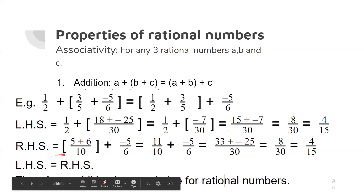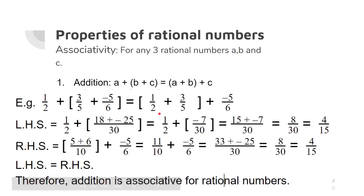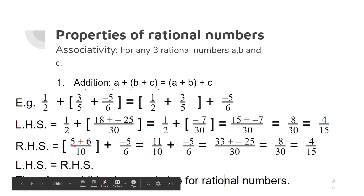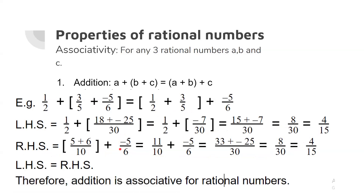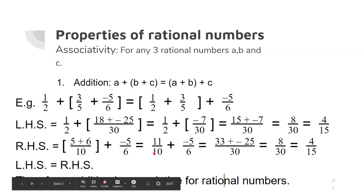Now we will simplify RHS. RHS is equal to: we have two different fractions with denominators 2 and 5, so LCM is 10. Numerator becomes 5 plus 6, plus the third fraction minus 5/6, equal to 11 upon 10 plus minus 5/6. Again we take LCM of 10 and 6, that is 30. Numerator becomes 33 plus minus 25, equal to 8 upon 30, equal to 4 upon 15. So LHS is equal to RHS. Therefore, we can say that addition is associative for rational numbers.